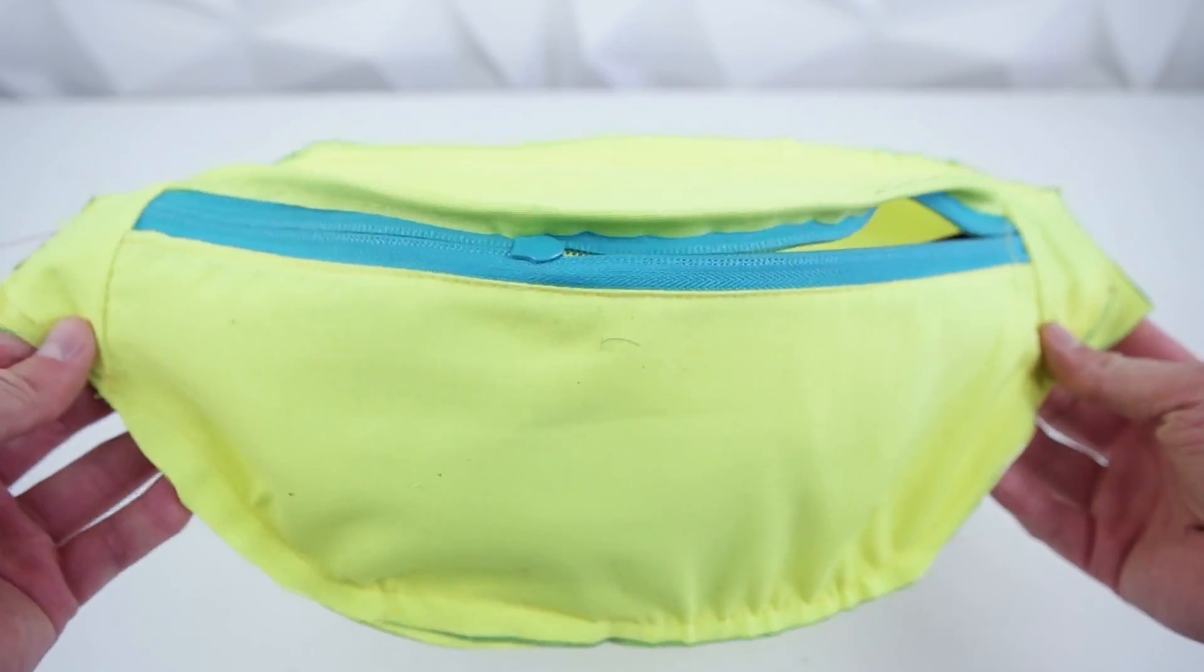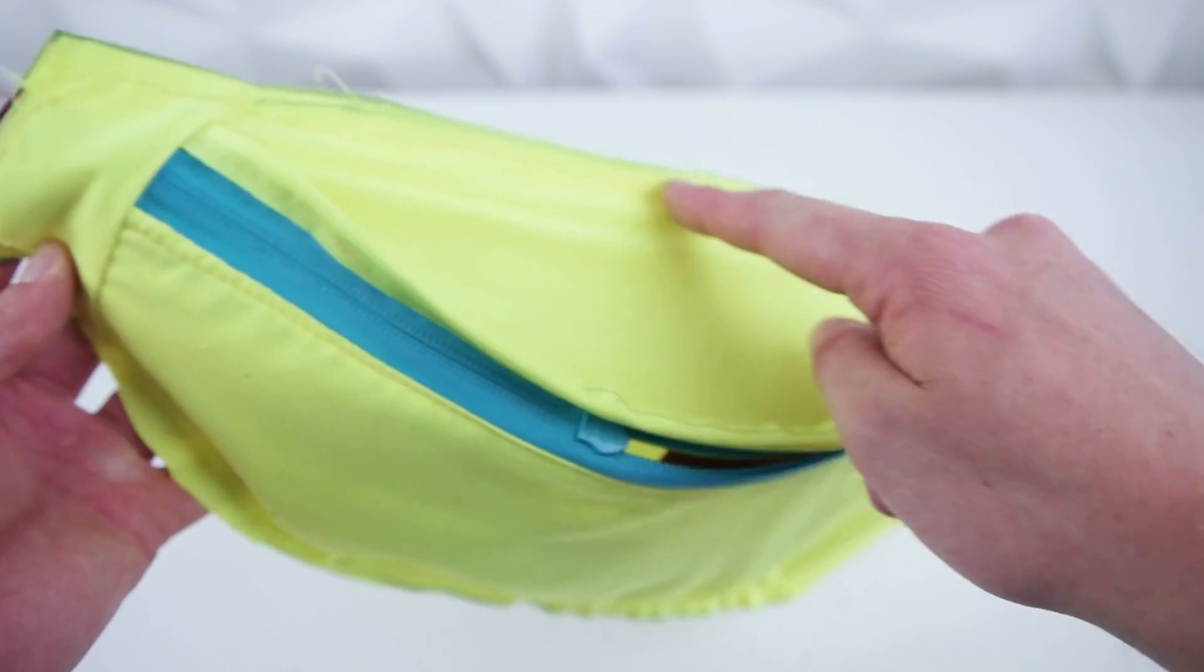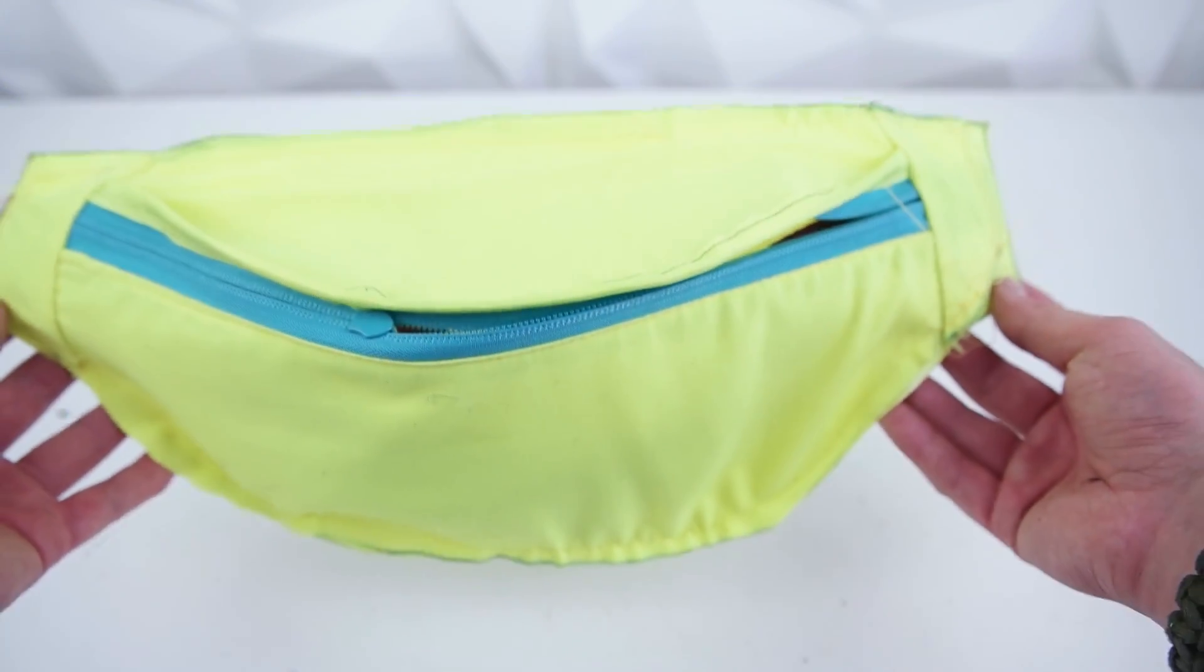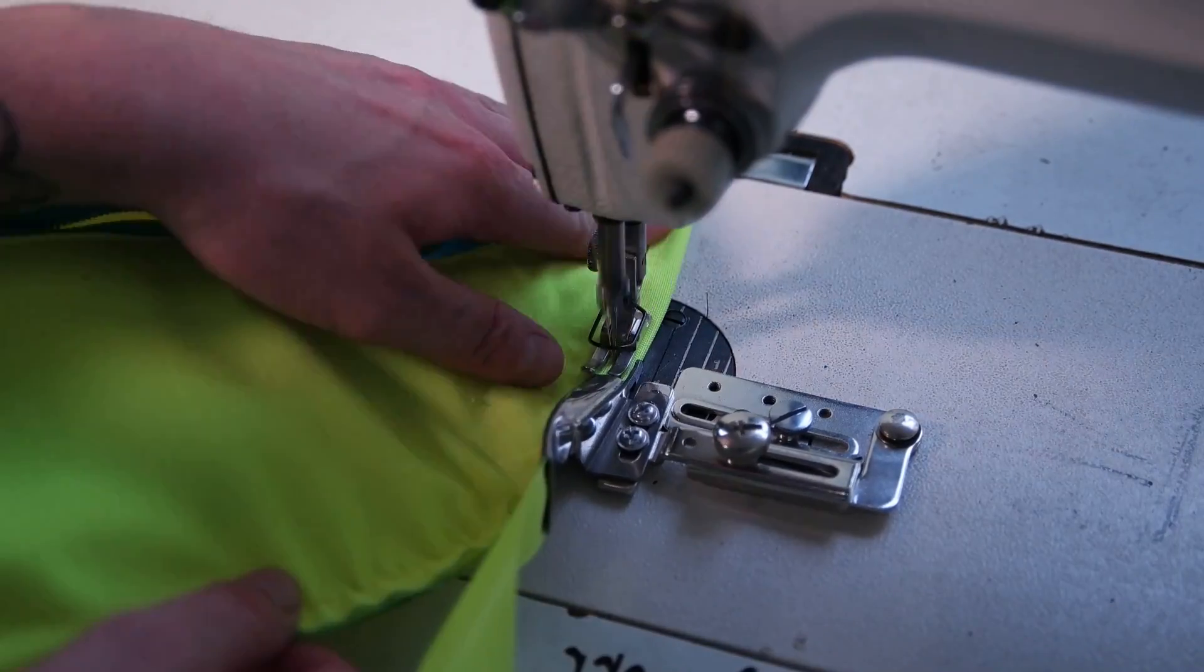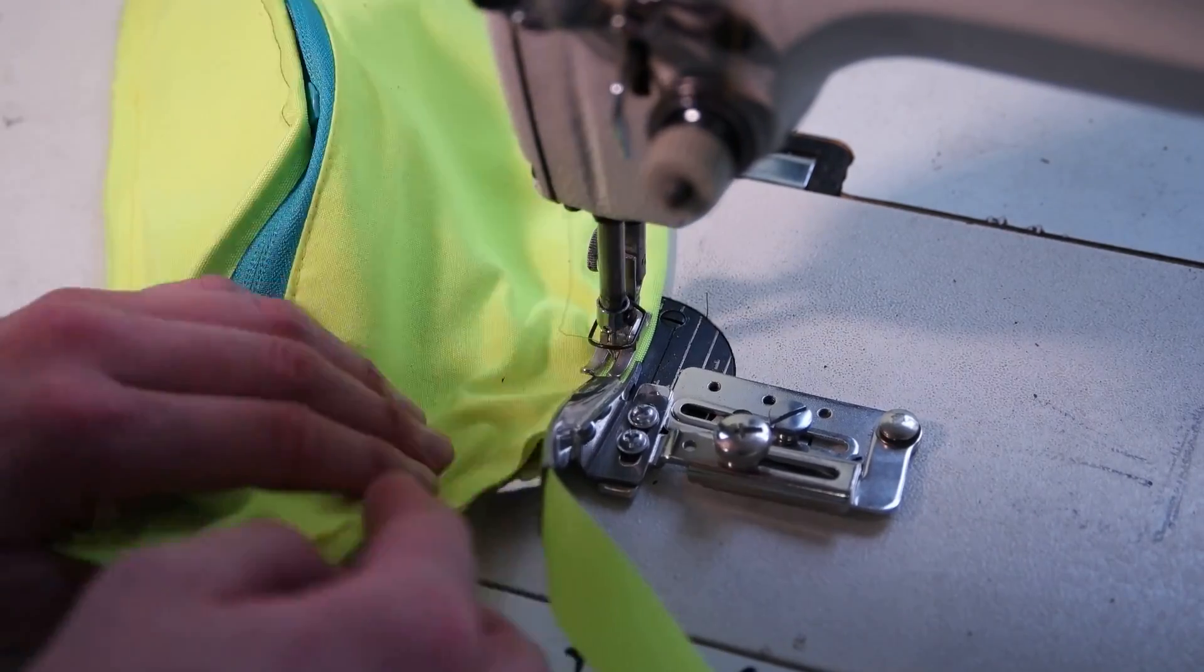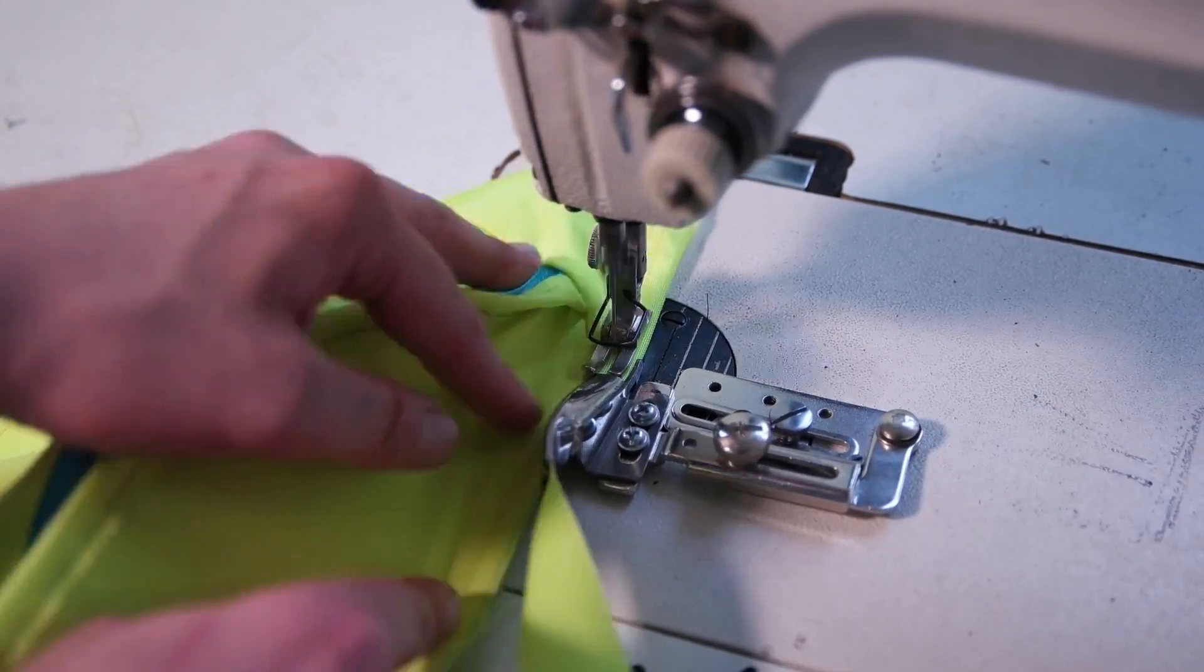Before we flip it right side out, we're going to clean those edges up with bias tape. This is going to add more strength and just make it look more professional in the end. When you're adding it on, I recommend doing the bottom, then the top, and then both the sides.